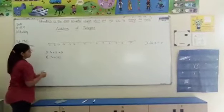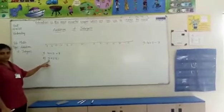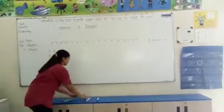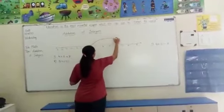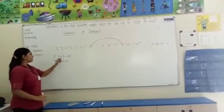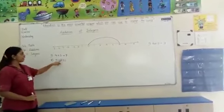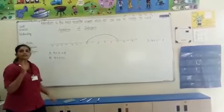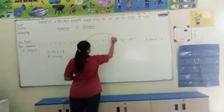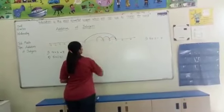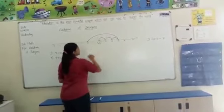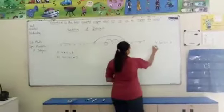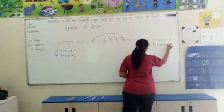The second example: 5 plus minus 3. Here one integer is positive and one is negative. The first integer is positive, that is 5, so we go from 0 to 5. Now we have to add minus 3. When you add a negative integer, you move towards the left side — 3 steps: 1, 2, 3. The answer is 2. So 5 plus minus 3 is equal to 2.